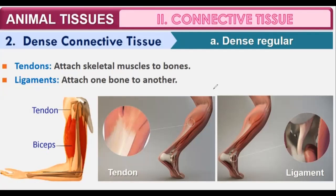Ligaments are the structures that attach one bone to another bone. Our body's skeletal system is made up of both bones and muscles — specifically skeletal or voluntary muscles. Muscles and bones also have connections between the bones so they remain attached to each other. Tendons help skeletal muscles attach to bones, while ligaments help attach one bone to another bone.